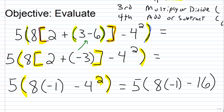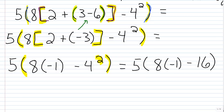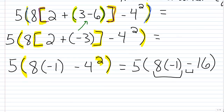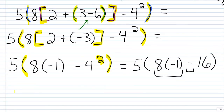Next, inside the parentheses, multiplication is higher priority than subtraction. So we do 8 times negative 1, which is negative 8. The expression becomes: 5 times the quantity, negative 8 minus 16. Multiplication occurs as the third step — multiply or divide from left to right.